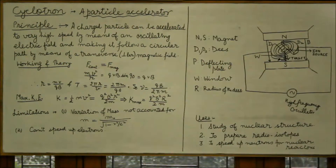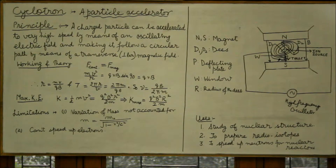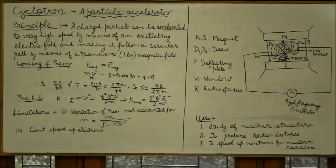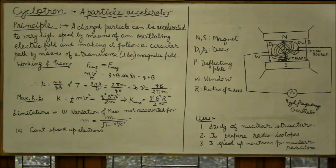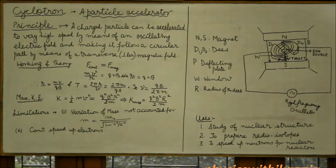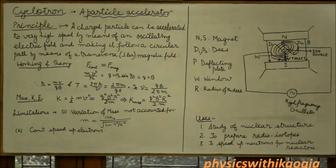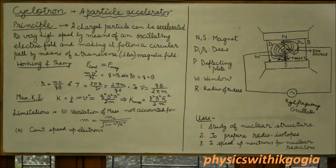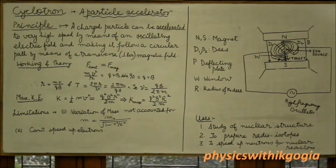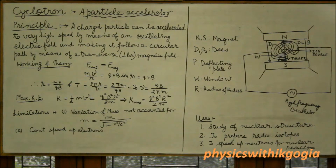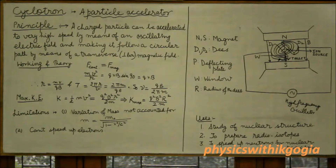One of the most important topics in magnetic effect of current is the cyclotron. It is a particle accelerator and is used to speed up positively charged particles like protons, deuterons and alpha particles. These high speed particles are required for nuclear research.